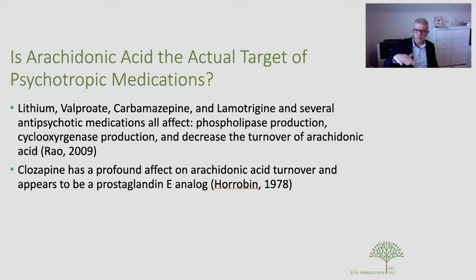Many effective mood stabilizers — lithium, valproic acid, carbamazepine, and lamotrigine — all have in common that they reduce the turnover of arachidonic acid, thus making it more available for prostaglandin synthesis. Several antipsychotics share that effect, most notably clozapine, which has the most profound effect on arachidonic acid turnover. Horobin stated that prostaglandin E and clozapine are structurally and functionally similar drugs.